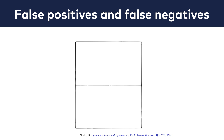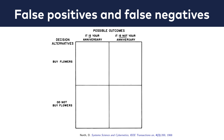One of the best explanations I've heard about false positives and false negatives was in Dr. David Weissman's presentation, who took it from a science paper back from 1968. It's an everyday life situation: let's say you are a husband, you go home, but you can't remember whether today is your anniversary or not. You try to predict and decide whether you should bring flowers or not.